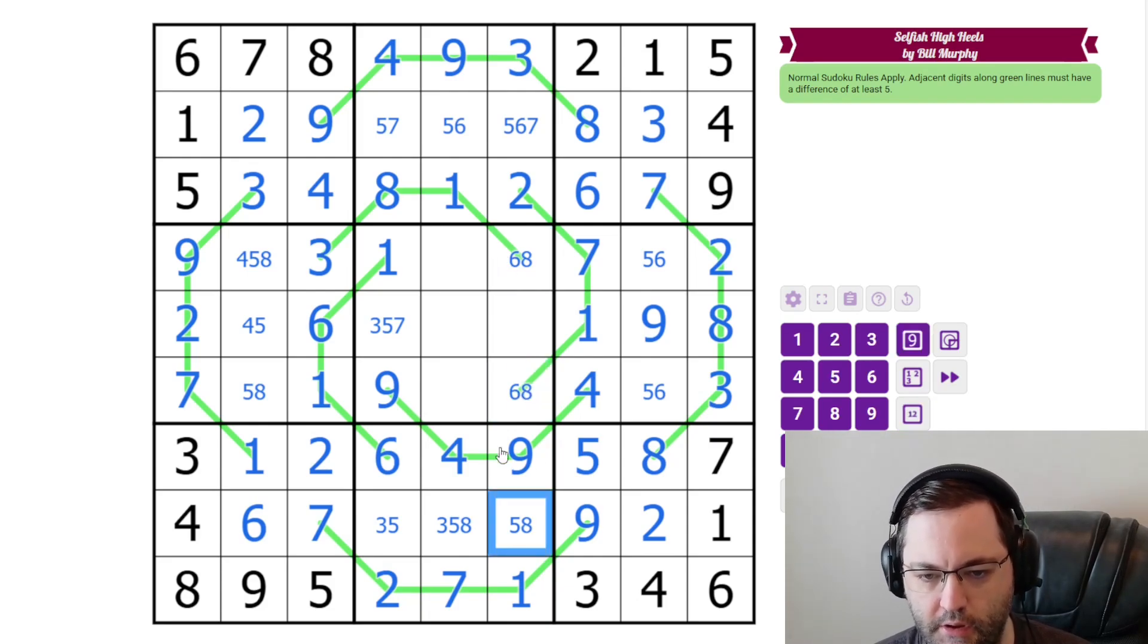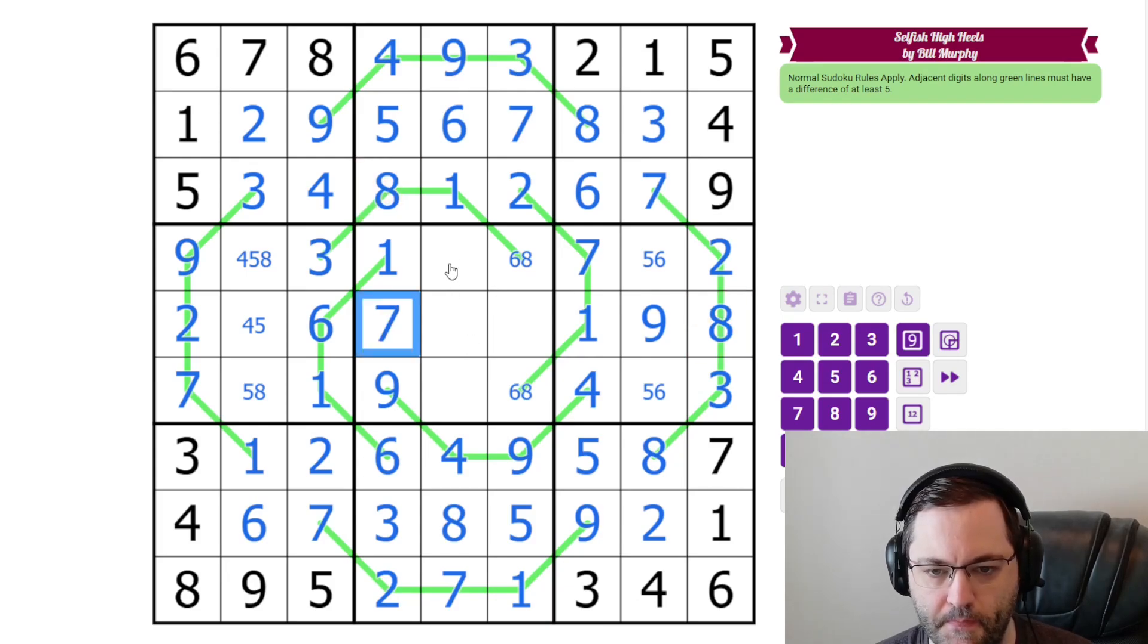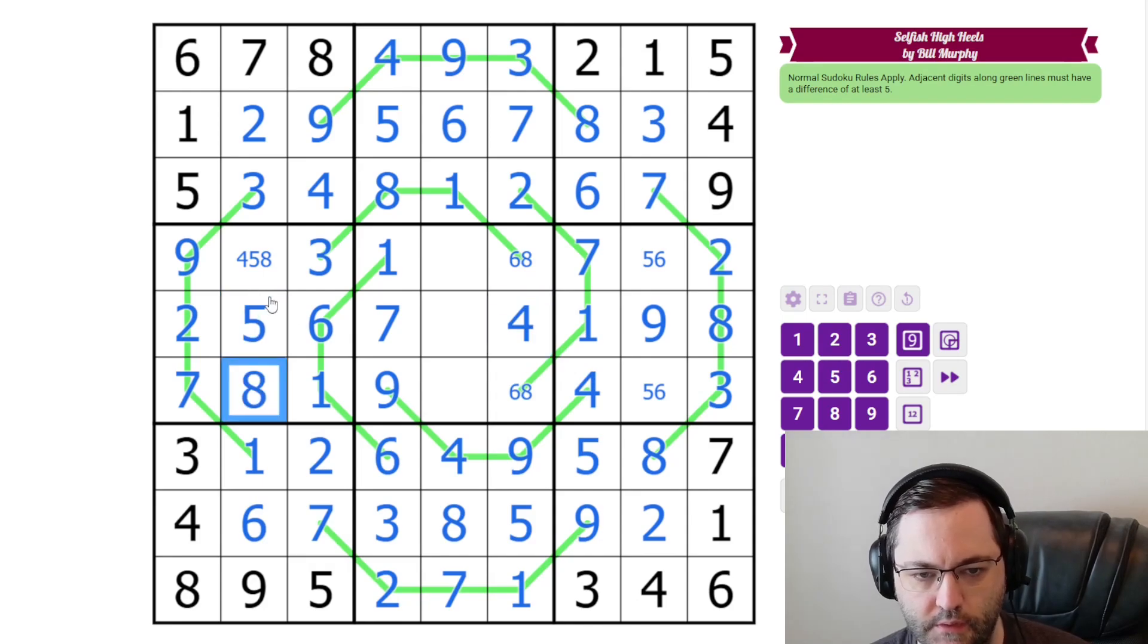This cell needs to be high. So that gives us a six, eight pair here. So that's going to resolve all of this. Six, eight pair also resolves this up here. It's going to place a seven there. Four is the last digit here, which resolves these. The eight resolves six, eight, six, five.